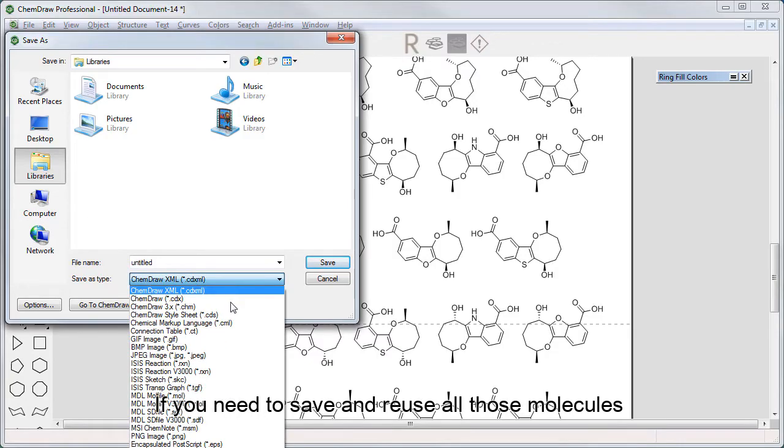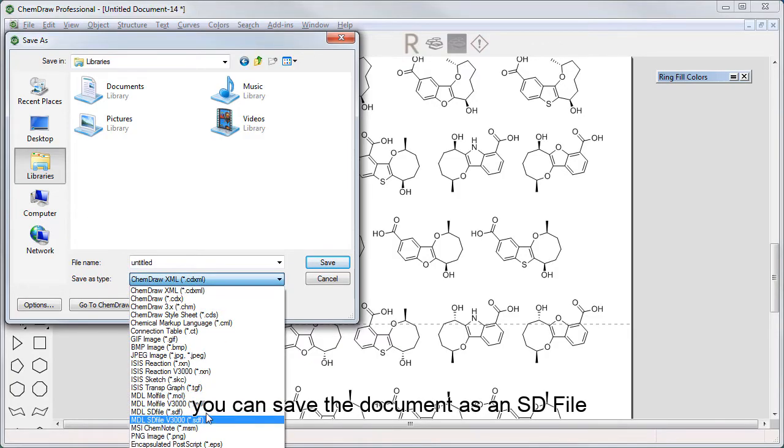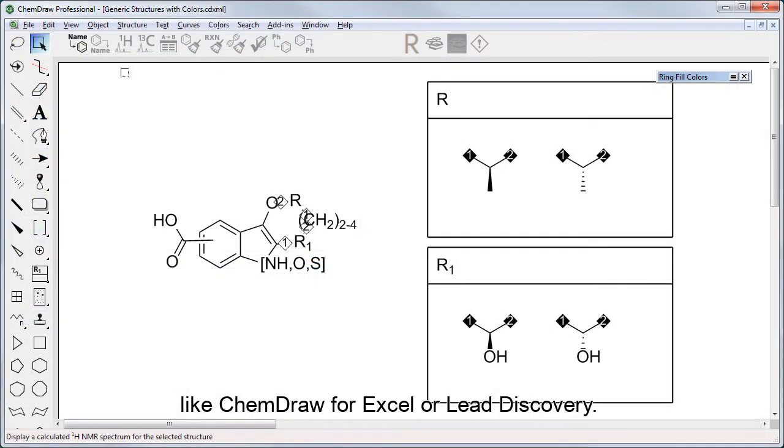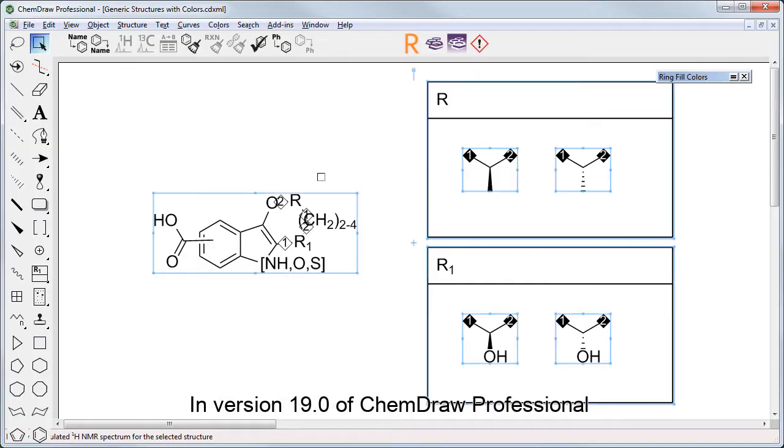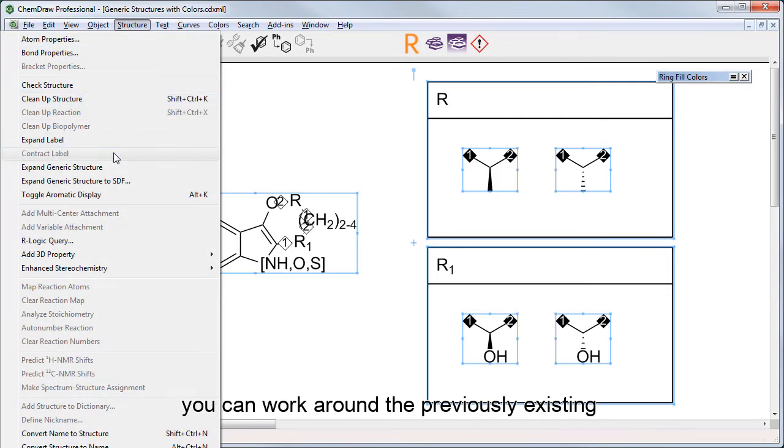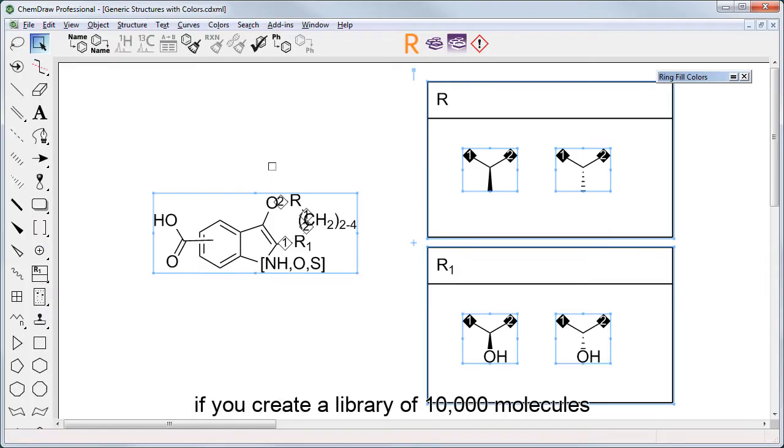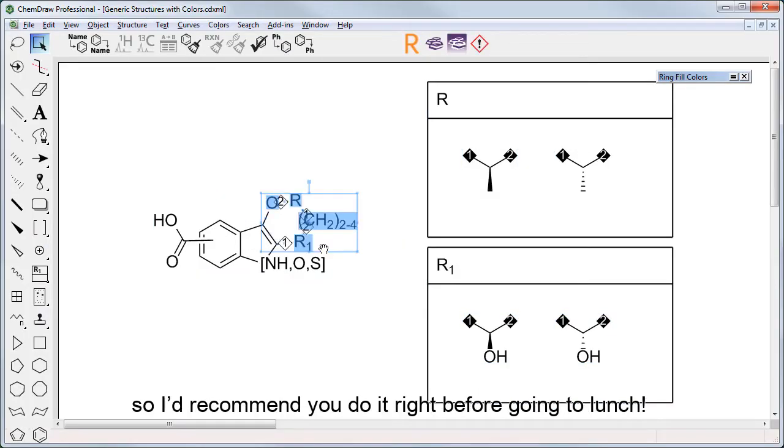If you need to save and reuse all those molecules, you can save the document as an SD file and import that into another application like ChemDraw for Excel or Lead Discovery. In version 19 of ChemDraw Professional, you can work around the previously existing upper limit of enumeration of 500 and enumerate directly to an SD file. Bear in mind that process may take a while if you create a library of 10,000 molecules, so I'd recommend you do it right before going to lunch.